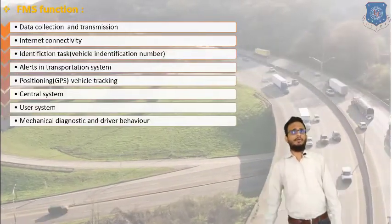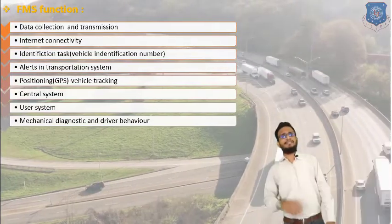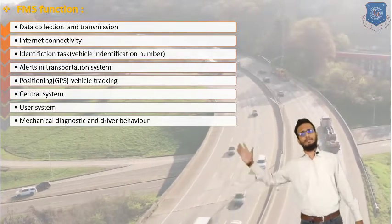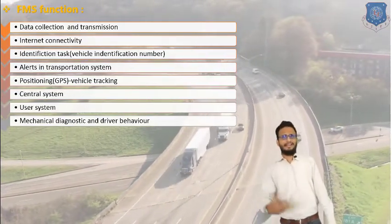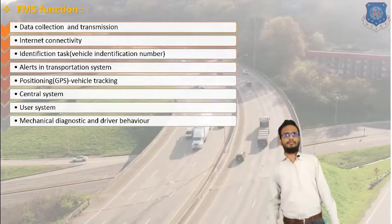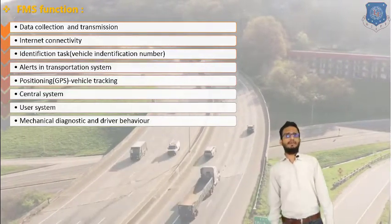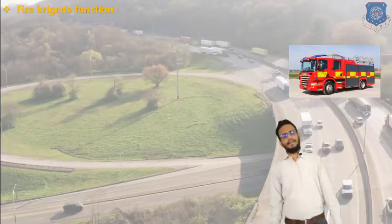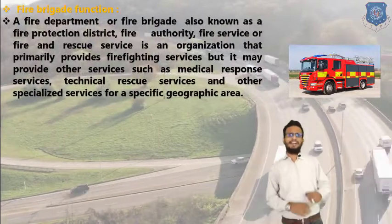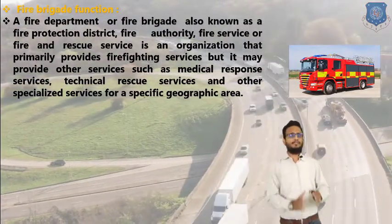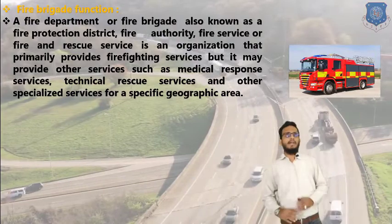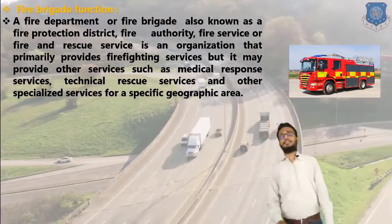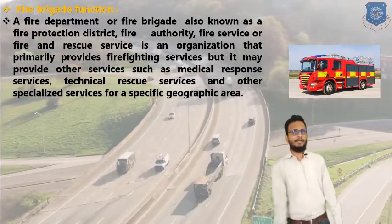FMS functions are also directly included in 108 organizational activities, which we had already discussed in previous videos — data collection systems, identification of numbers, users, mechanical diagnostics, and driver behavior. Now let us discuss fire brigade systems and fire brigade functions. A fire department or fire brigade is also known as a fire protection district, and fire authority is also known as fire fighter fire services and rescue operations of a particular department.